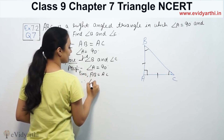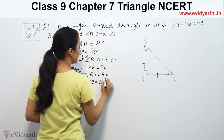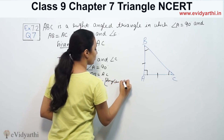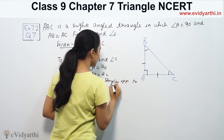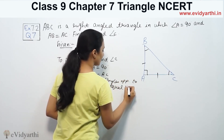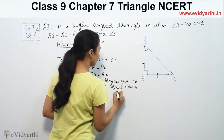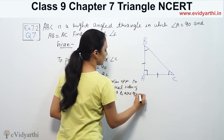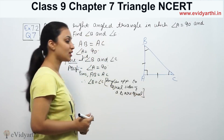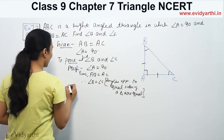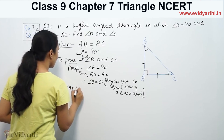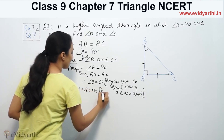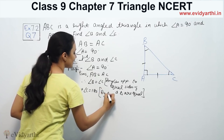Therefore, angle B is equal to angle C, because angles opposite to equal sides of a triangle are equal. Now, angle A plus angle B plus angle C equals 180 degrees, by the angle sum property.